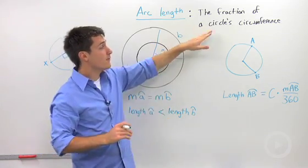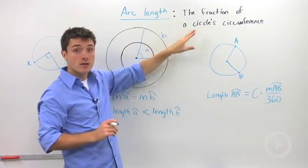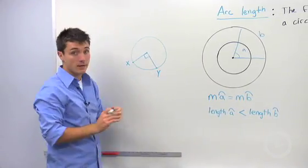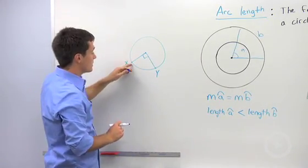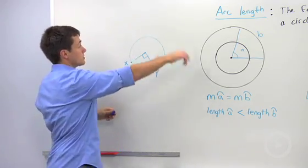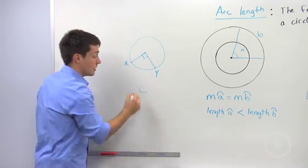Arc length is the fraction of a circle's circumference. So if we looked at a circle over here where I've drawn a right angle, and I said, what is the distance between X, Y?